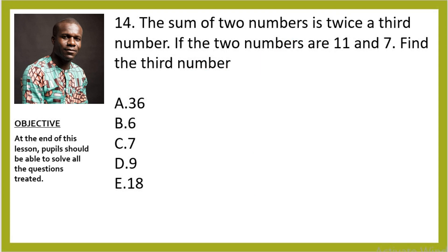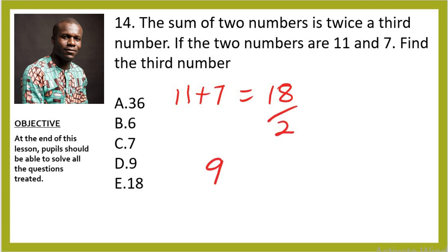Question 14: The sum of two numbers is twice a third number. If the two numbers are 11 and 7, their sum is 18. They told us the sum is twice a third number, so the third number must be half of 18, which is 9. The right answer is option D.